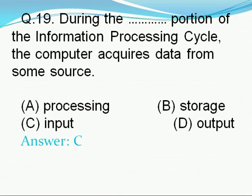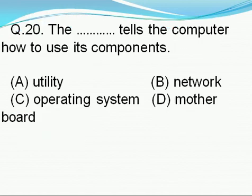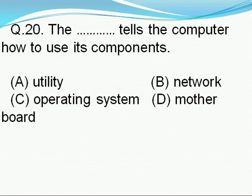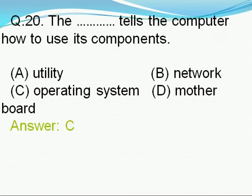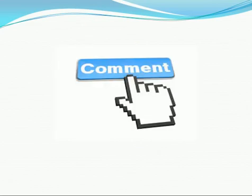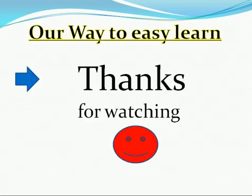Question number 20: The dash tells the computer how to use its components — option A: utility, option B: network, option C: operating system, option D: motherboard. Right answer is C, i.e., operating system. The operating system tells the computer how to use its components. Thanks for watching, bye bye.